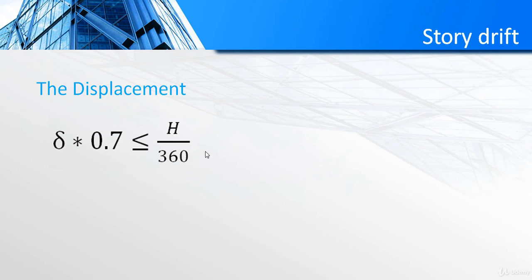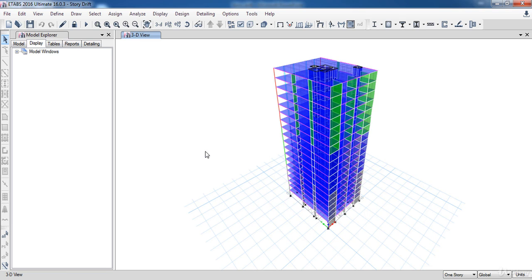The reason behind multiplying all of them by 0.7 is that the results from E-tabs are in ultimate state, so to convert them to working state we need to multiply by 0.7. Now I am going to do that in E-tabs. To display the story drift in E-tabs we need to define a new load pattern.